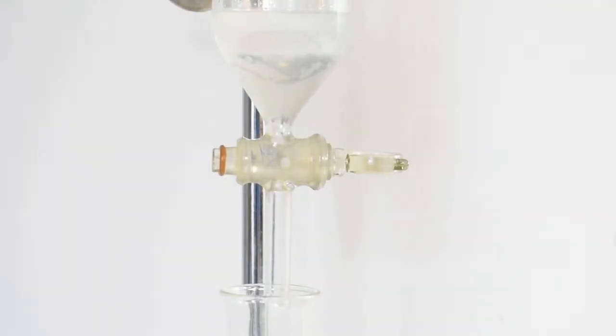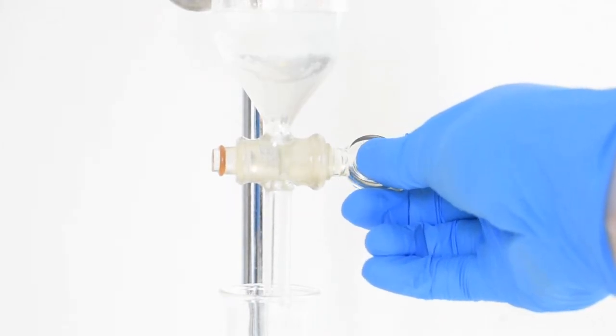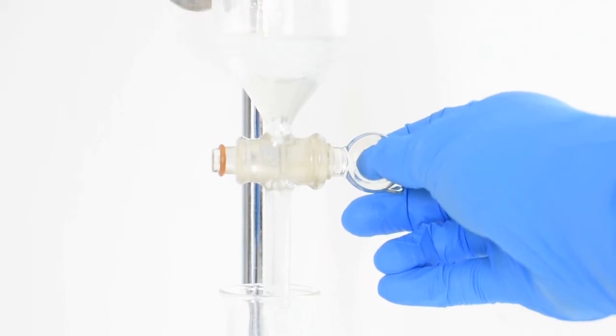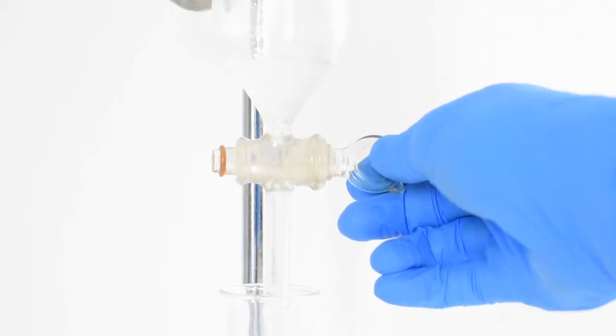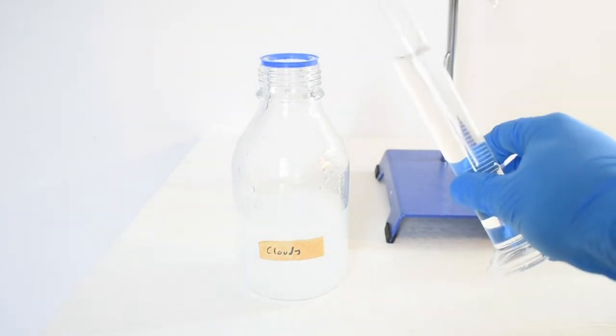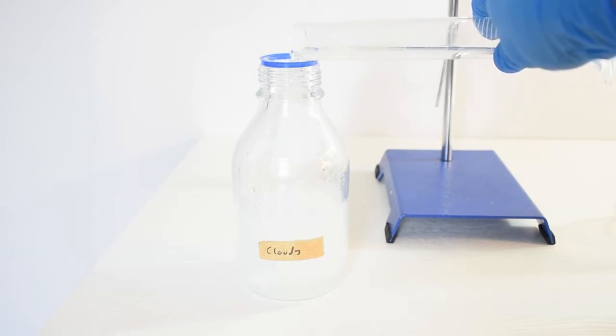From the separatory funnel, the lower dichloromethane layer is drained into a conical flask, while the upper aqueous layer will be returned back to the bottle. Another 50 milliliters of dichloromethane is added to the bottle and the washing step is repeated.